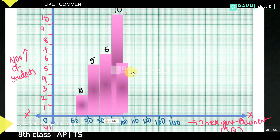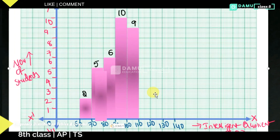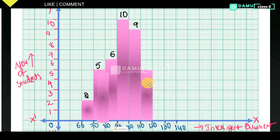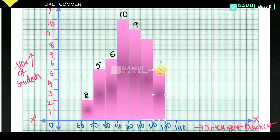For 100 to 110, the frequency is 9, so we construct a bar up to 9. For 110 to 120, the frequency is 8, so we extend up to 8. Our next value for 120 to 130 is 5, so we construct a bar up to 5.